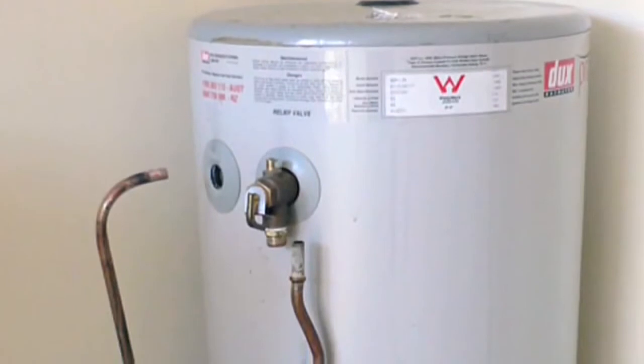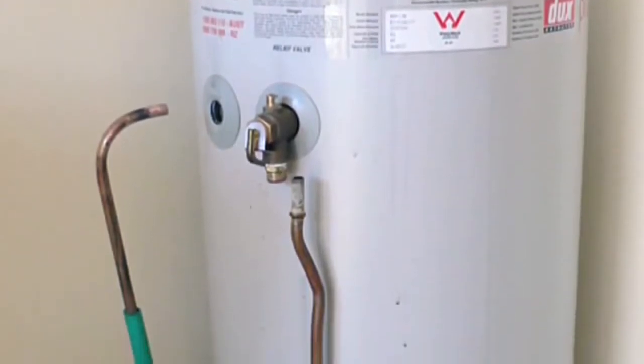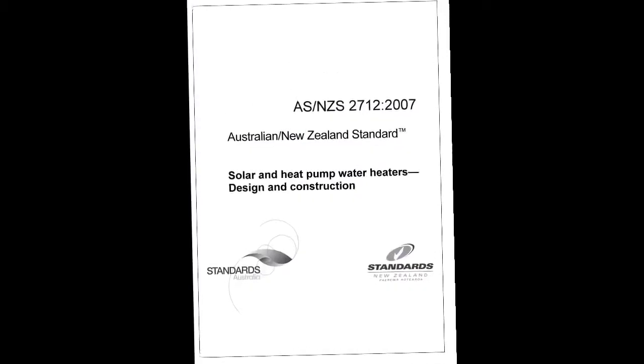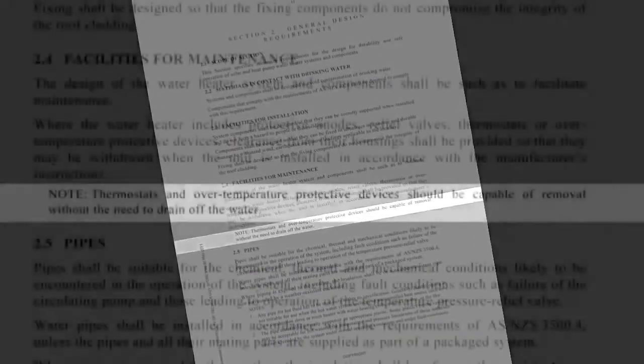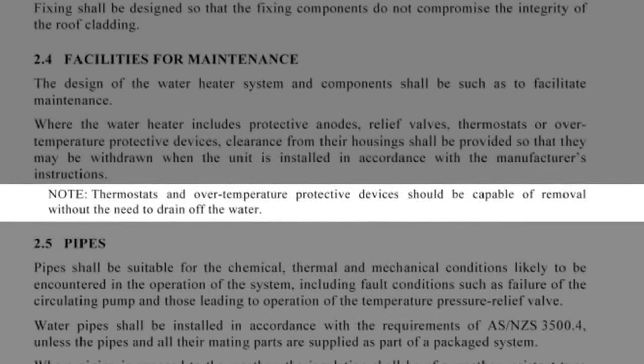In an Australian summer, water in collectors can easily approach boiling point. This can cause excessive pressure buildup and can damage the lining of vitreous enamel tanks. The Australian standards state that solar hot water systems must provide over-temperature protection without draining water. So a temperature pressure relief valve is not enough.